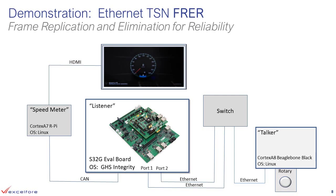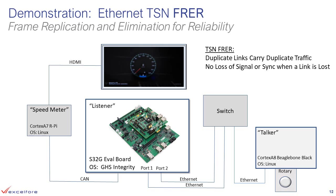In our next demonstration, we will examine FRER, Frame Replication and Elimination for Reliability. This is a necessary technology for implementing redundant network links in Ethernet TSN. In our setup, we have a talker which is a BeagleBone Black board operating the Linux operating system. This has a rotary device which we will manually operate to generate a signal, which will be transmitted over Ethernet via a switch to the listener, which is our S32G evaluation board running the Integrity Operating System. The S32G will then calculate a speed in miles per hour and send this over CAN to a Raspberry Pi, which will render the speedometer for our display. FRER allows us to replicate the signal and timing at the switch so that the S32G board can receive two separate links with the information and can remain synchronized if either of those links is lost.